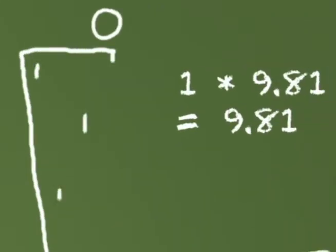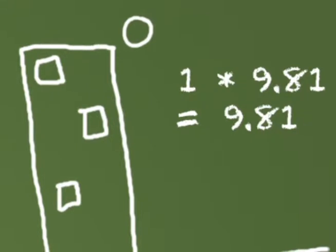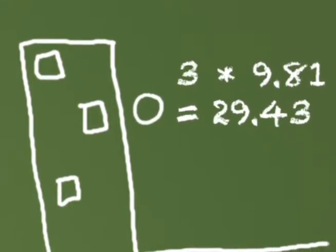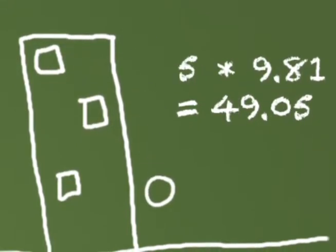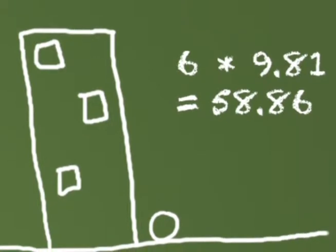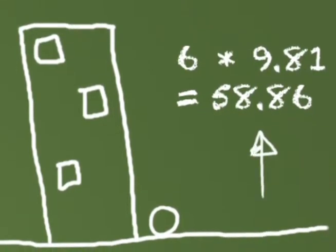Which means that an object falling close to Earth's surface increases its velocity by 9.81 meters per second every second. Multiplying that number by the number of seconds falling will tell you the velocity it gained during that time.